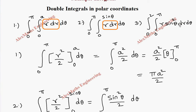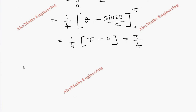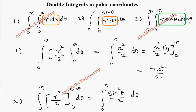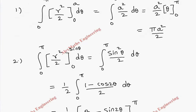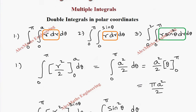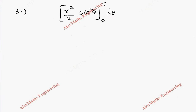Coming to the third problem: integral 0 to 2, integral 0 to pi, r sin²θ dr dθ. For the first integral with respect to r, we treat θ as a constant. So the integration becomes r² / 2 and sin²θ stays as it is. We have the limit from 0 to pi and dθ outside, with the outer integral 0 to 2.